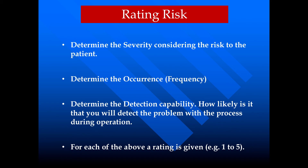If severity is very high, we have to score it as high. If severity is very low, then we score it as 1. Similarly, we have to score for occurrence and frequency. If occurrence is too many, we rate it as 5. If occurrence is negligible, we rate it as 1. Then for detectability — if detectability is very good, we rate it as 5. If detectability is very poor, we rate it as 1.